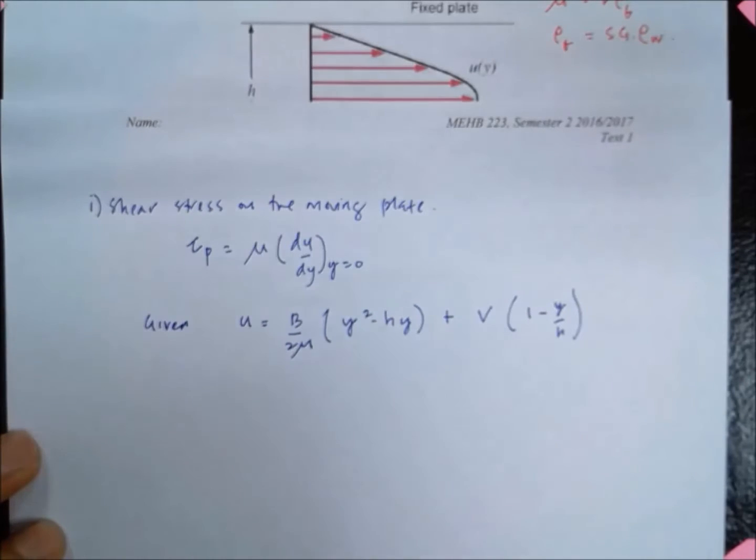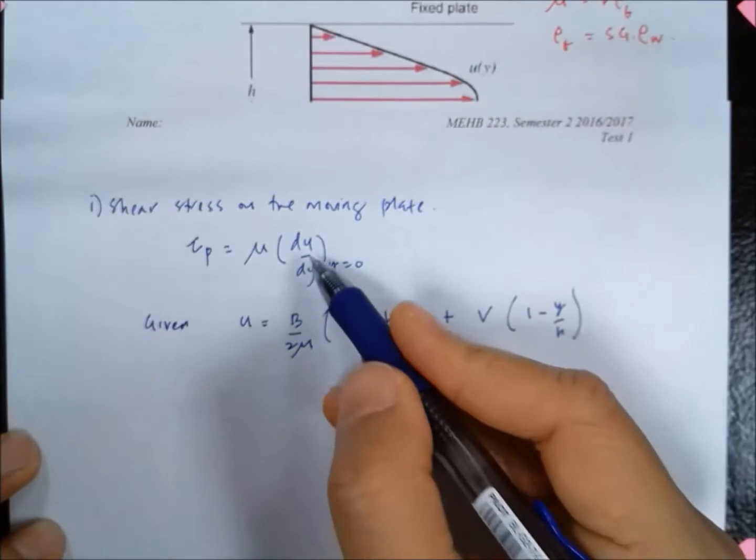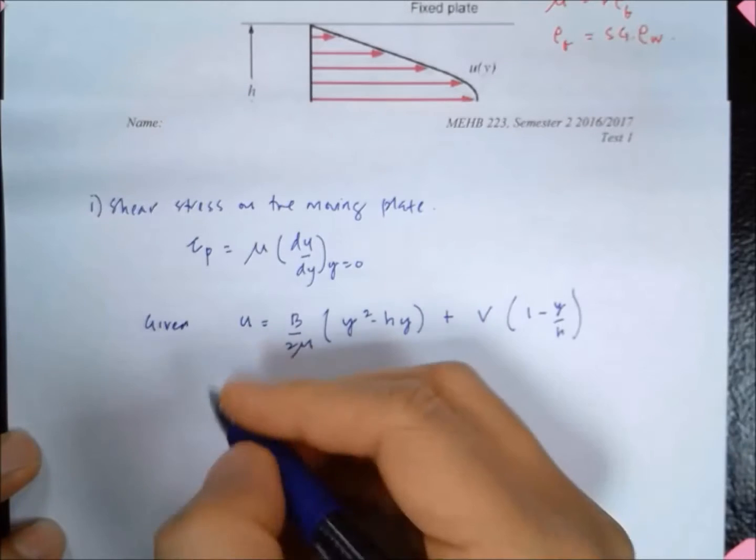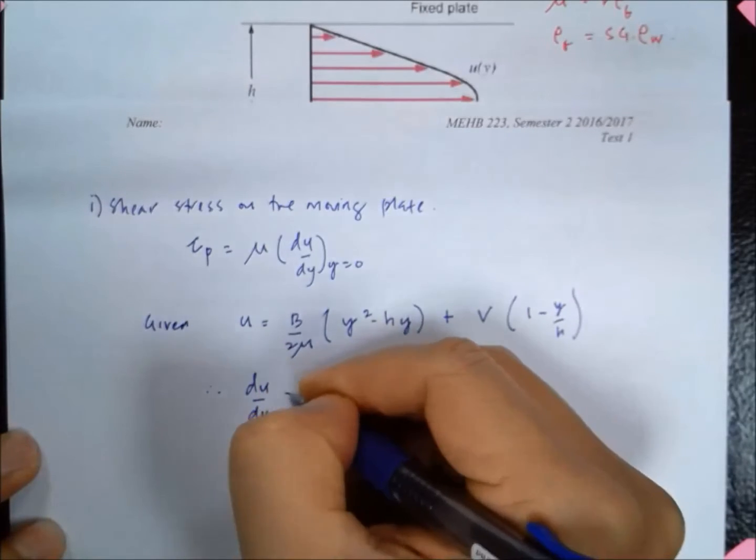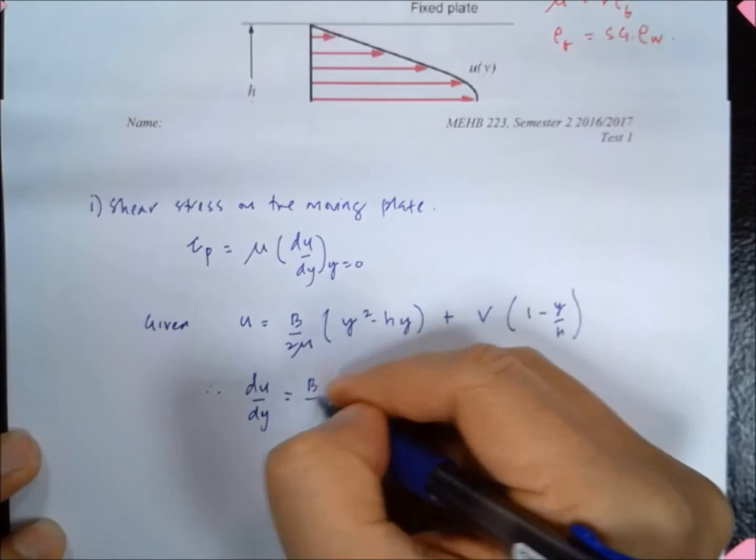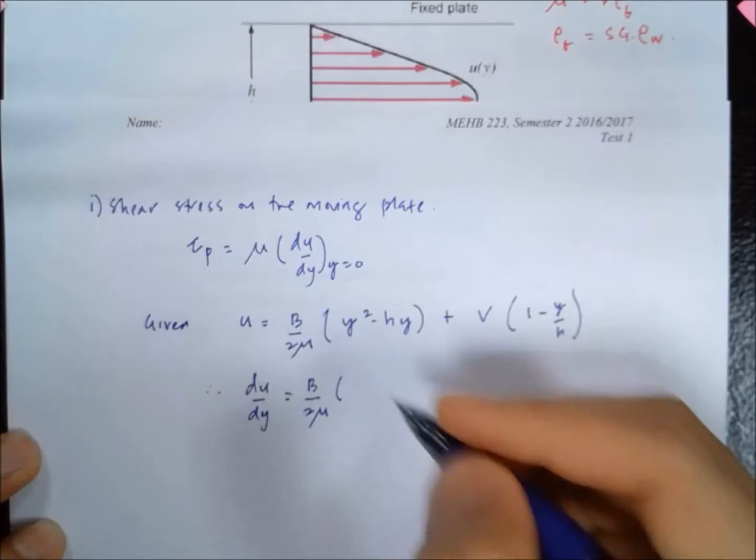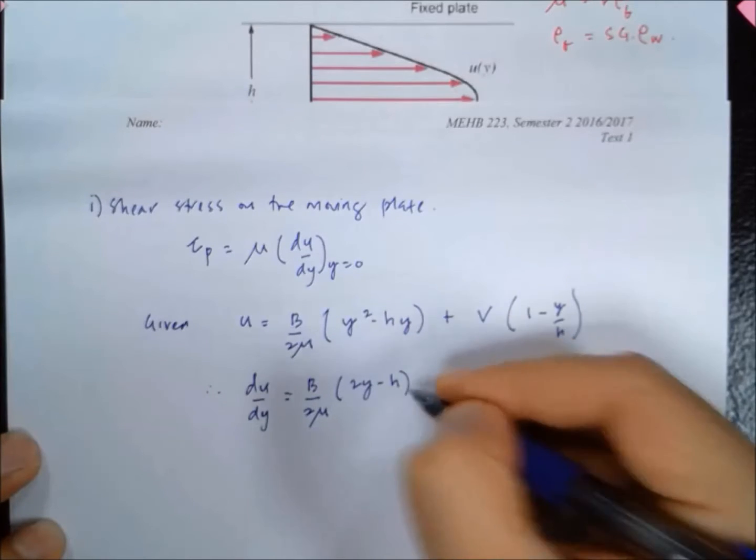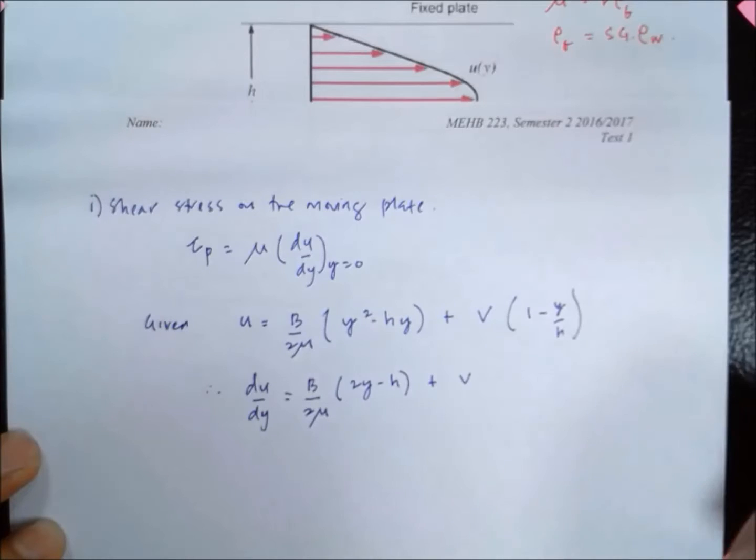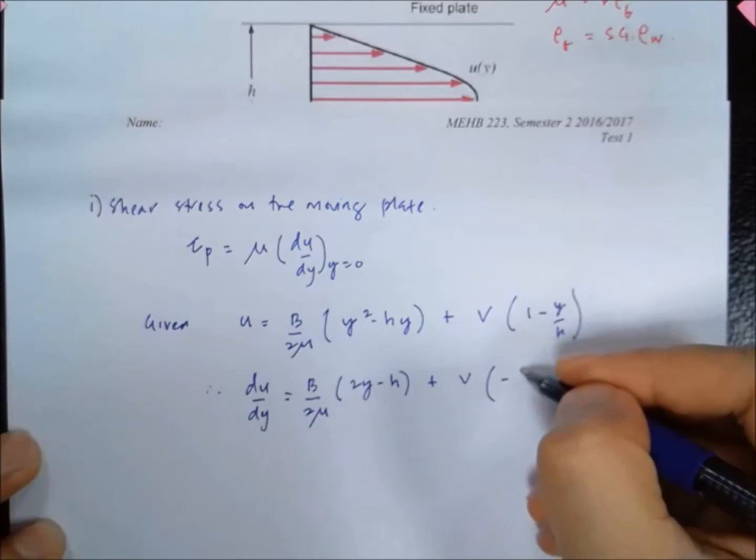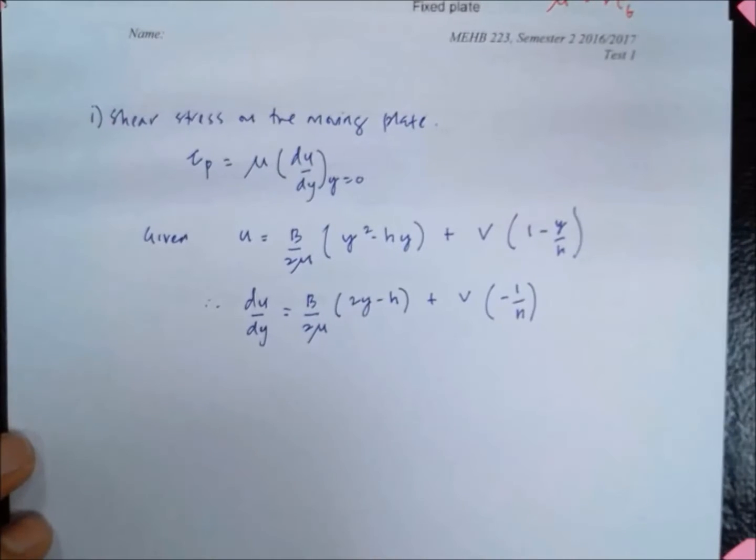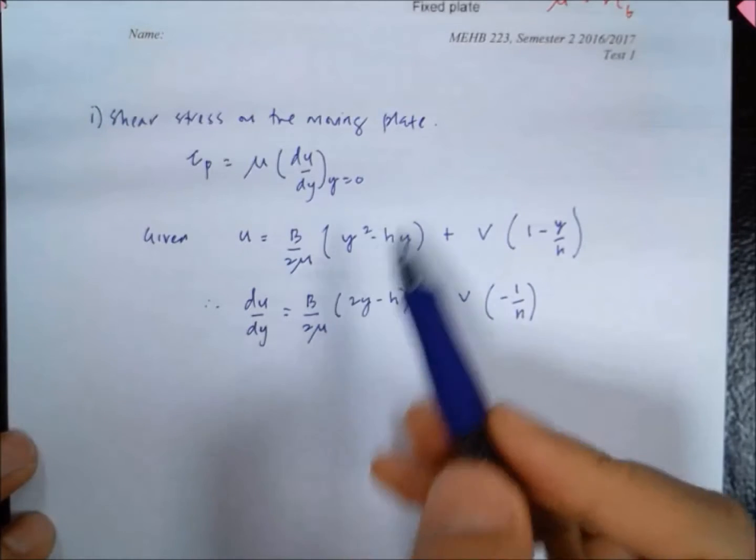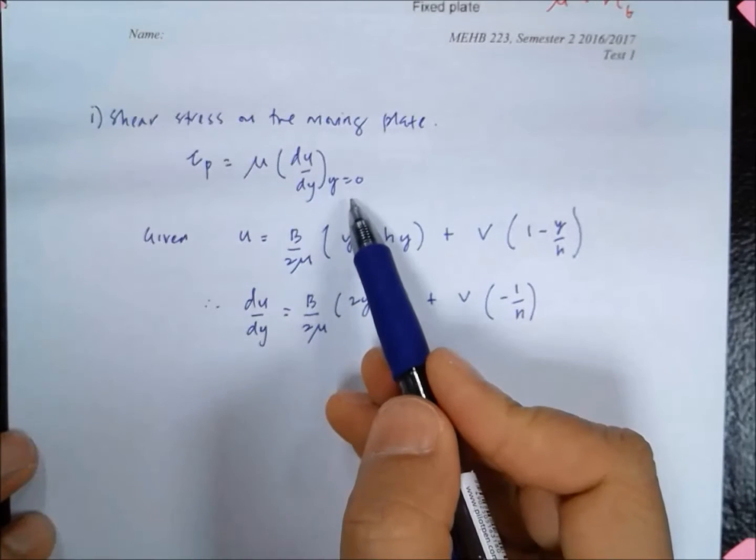The first thing we need to do is find the velocity gradient du/dy. We have to differentiate this equation. If you do that, du/dy equals B over 2 mu times (2y minus h) plus V times (minus 1 over h). We need to find du/dy at y equals 0, which is at the location of the plate which we want to pull.